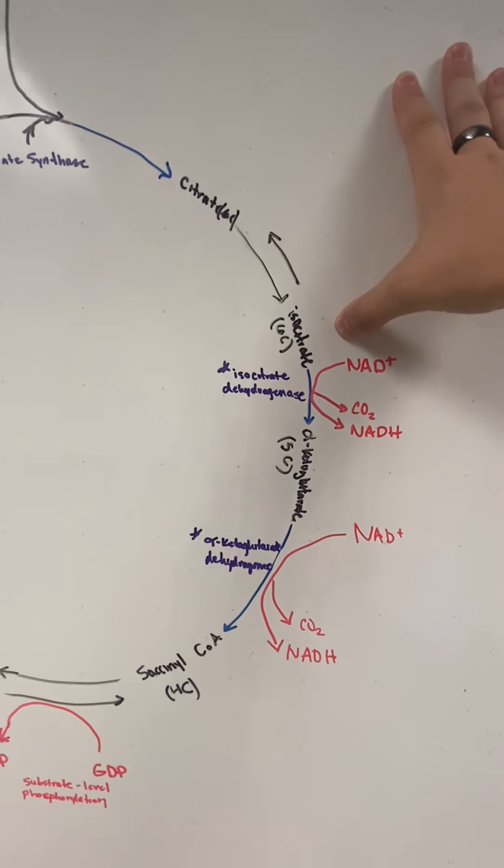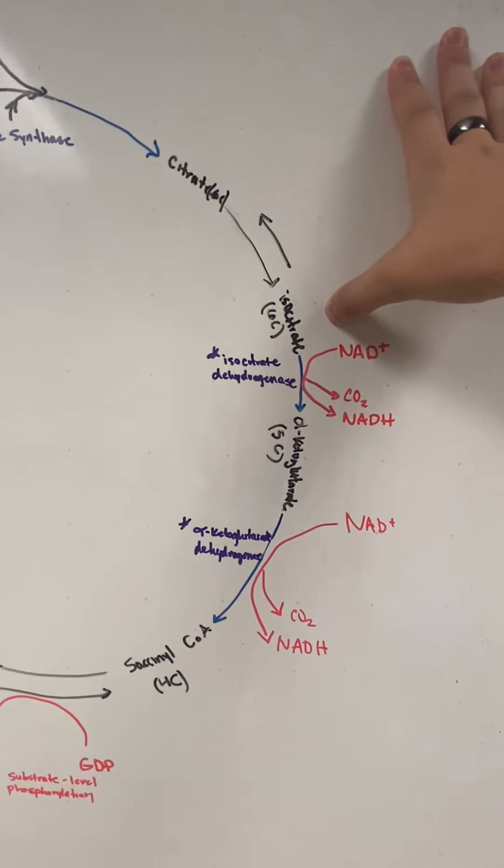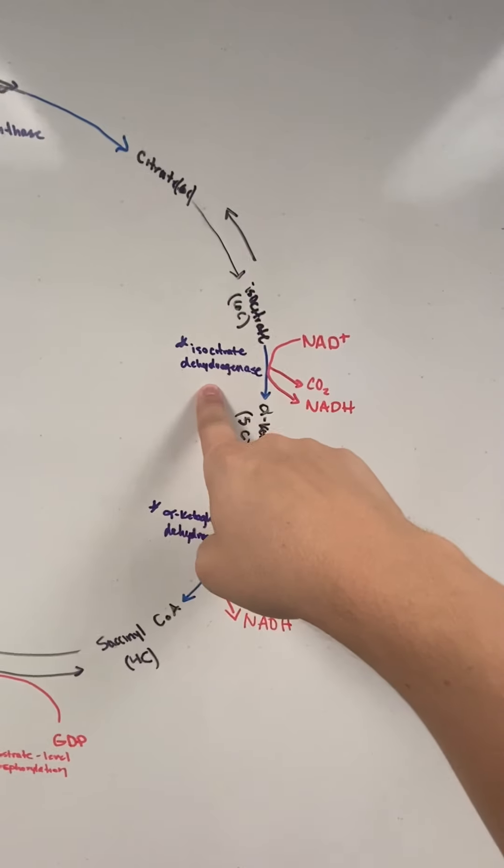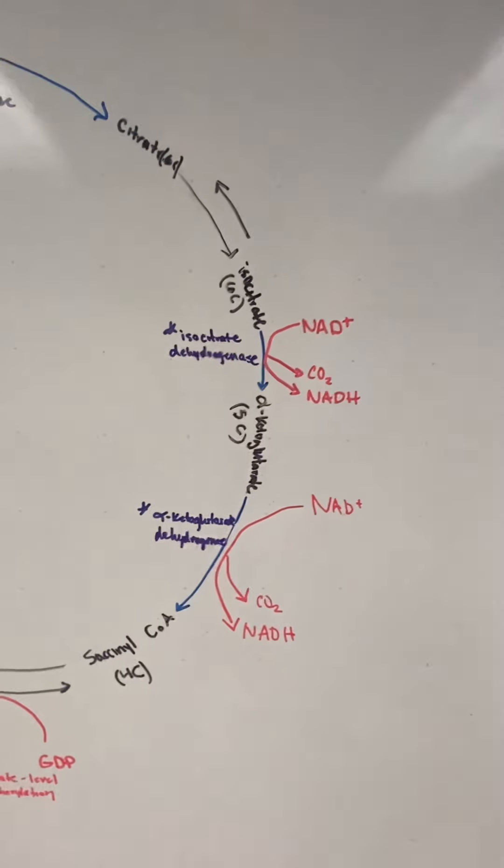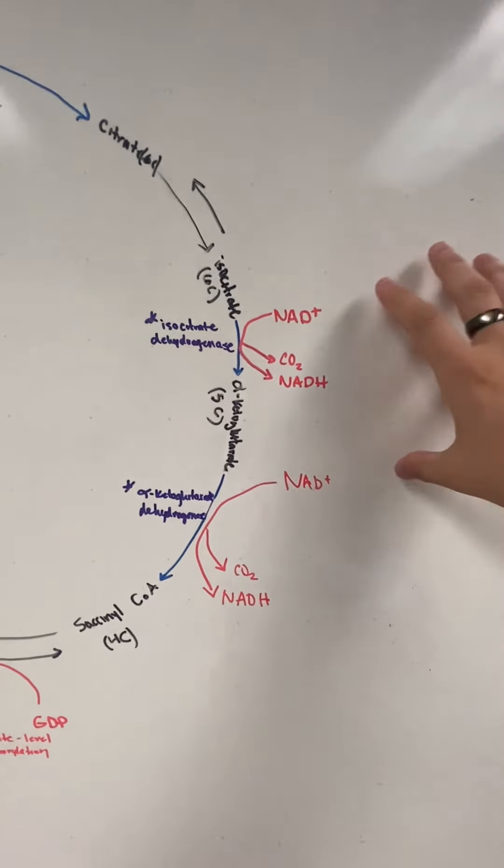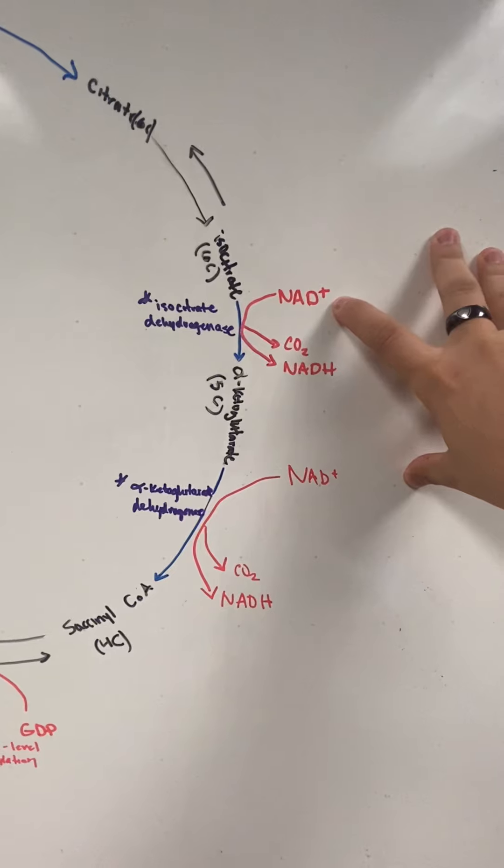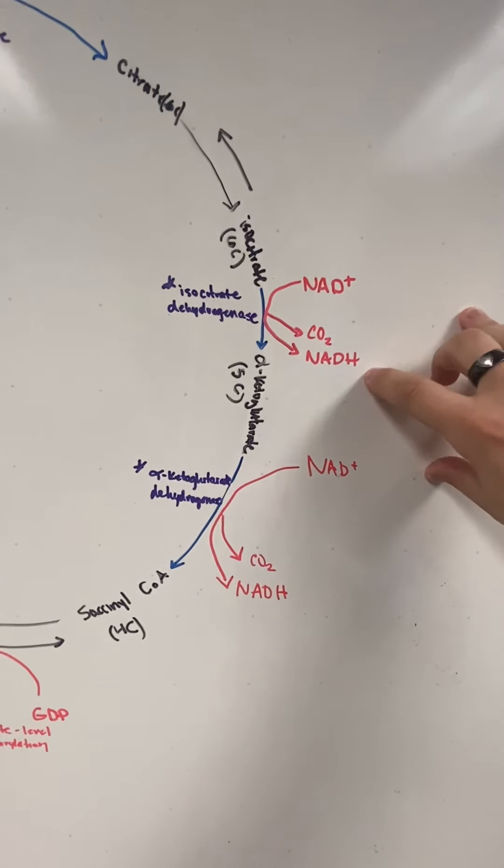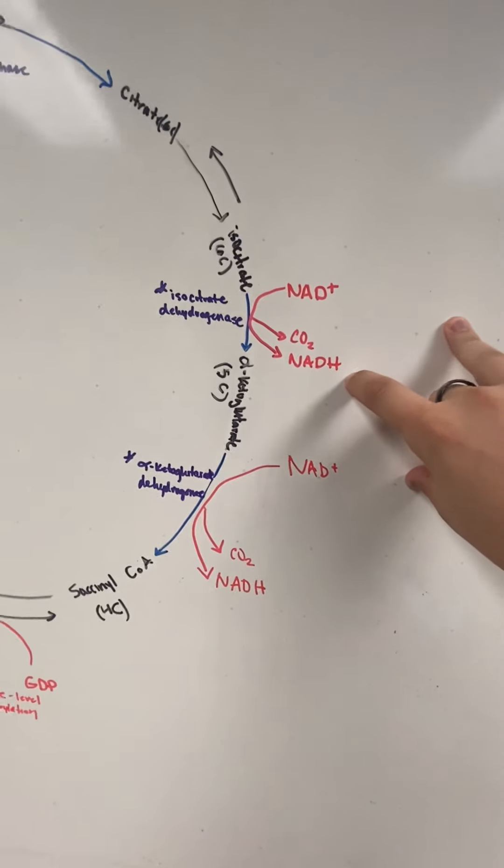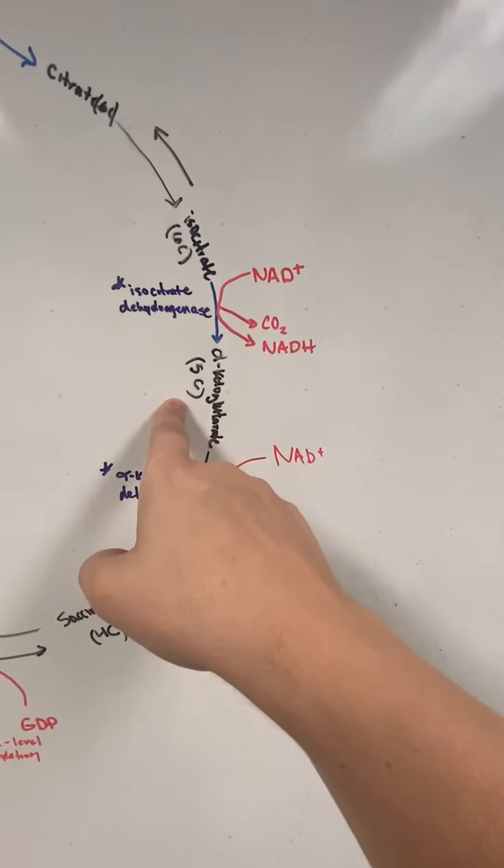We're going to end up with isocitrate, which is still that six-carbon unit, and then we're going to add isocitrate dehydrogenase. This is blue, so it's an irreversible reaction. We also have NAD+ coming in, and we're going to be releasing carbon dioxide and NADH. So we've lost one carbon. Now we're a five-carbon unit.